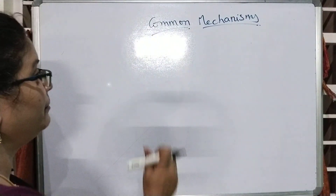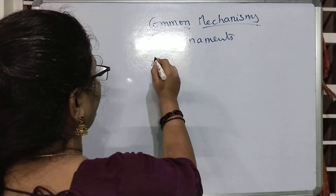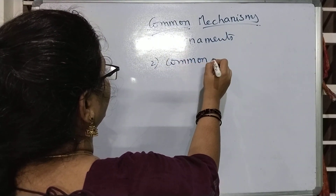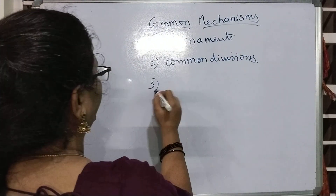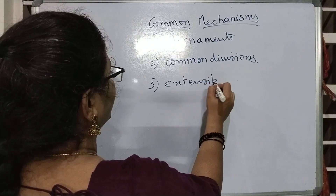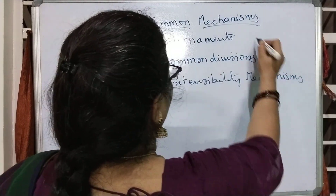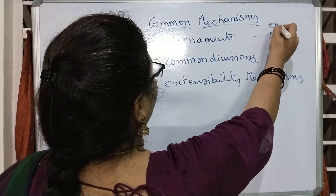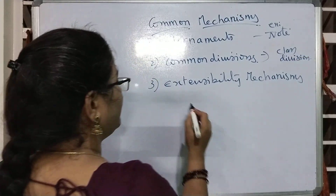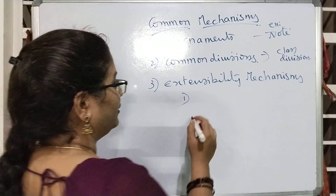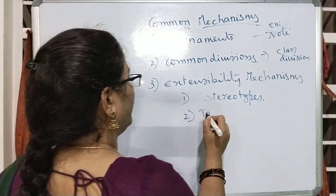These common mechanisms are nothing but: the first one is adornments, the second is common divisions, and the third one is extensibility mechanisms. In adornments, we have the best example as 'note.' In common divisions, we have class divisions. And coming to the extensibility mechanisms, the very first one is stereotypes, the second is tagged values.